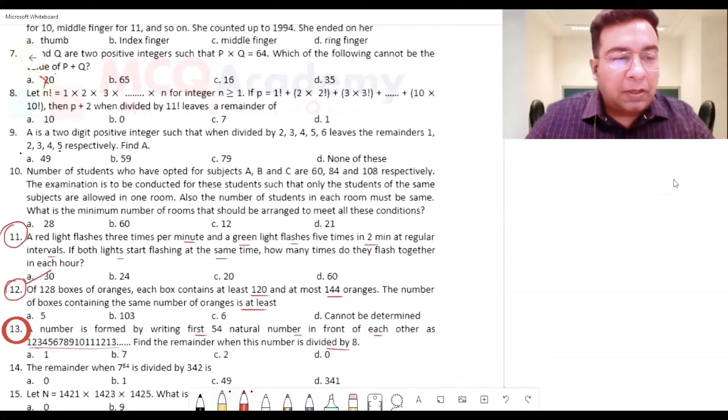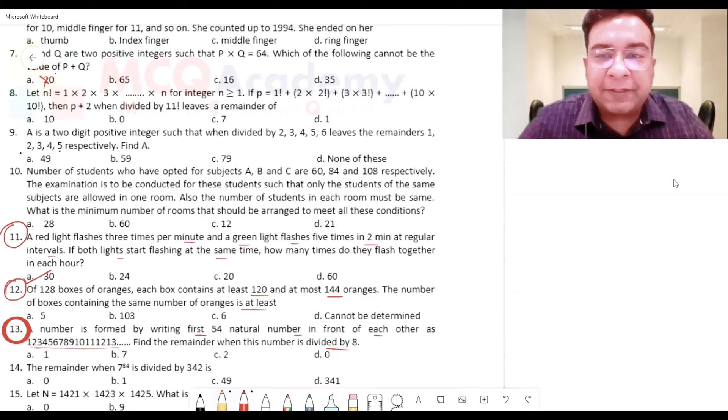Number 13, the remainder when this entire number is divided by 8 is what? What is the divisibility rule of 8?